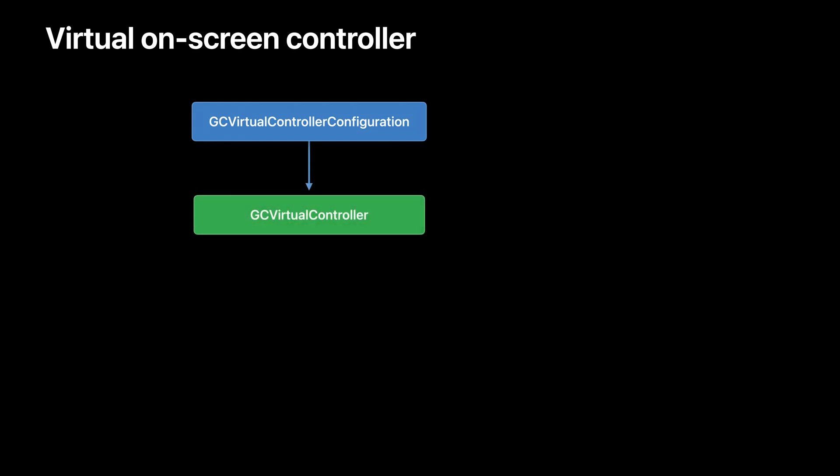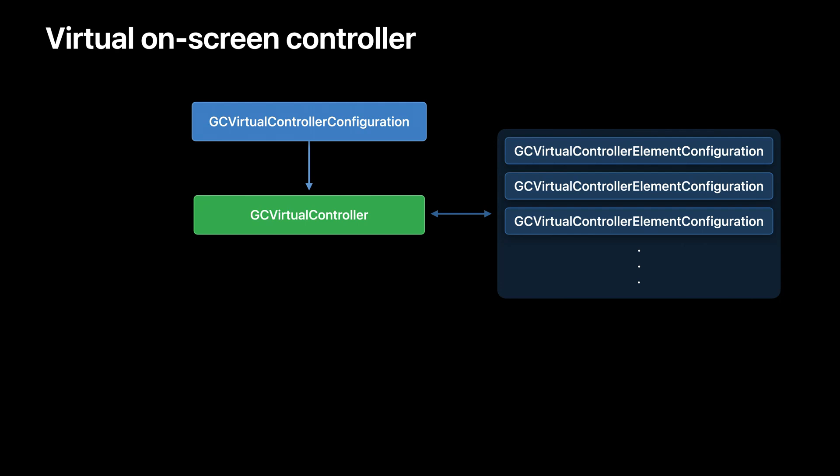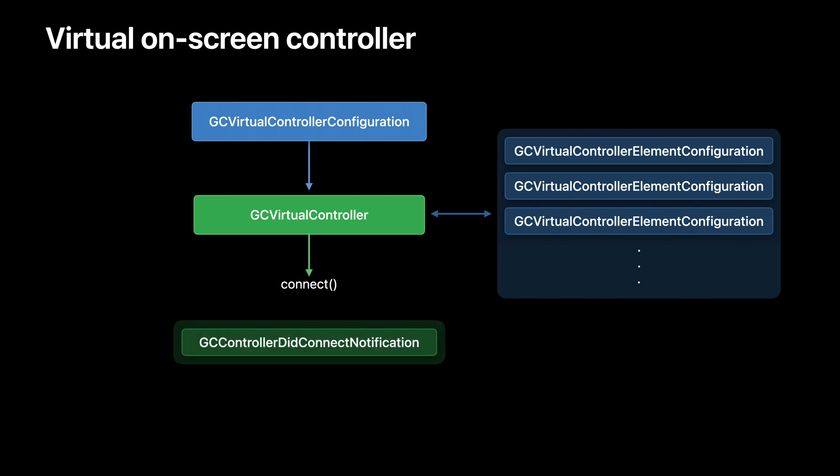Let's take a look at what you do to choose a layout and show your on-screen virtual game controller. First, you create a GC controller configuration, identifying all the possible buttons and joysticks you will want to use. Then, you create a virtual controller from that configuration. Then, you can optionally do some configuration on the elements, such as setting custom shapes or having some elements hidden. Next, you tell the system to connect the controller, and that will trigger the same GC game controller did connect notification you're used to handling, giving you a GC controller object.